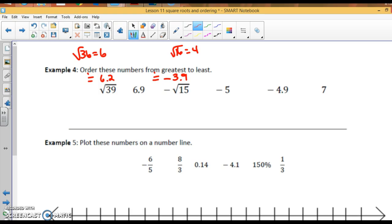Alright. So, greatest to least. I need the biggest number. The biggest number on this list is 7. Then, 6.9. Then, the square root of 39 because that's like 6.2. Do I have any other positives? No, that took care of my positives. Now, my negatives. Remember, these kind of go backwards. It'll be negative square root of 15, negative 4.9, and then negative 5.